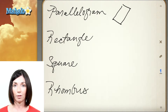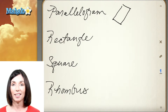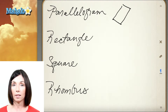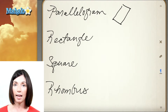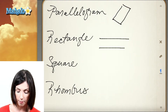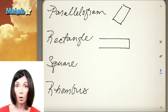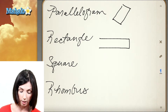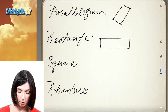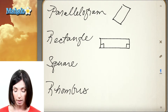A rectangle is a parallelogram with four right angles. It has two pairs of parallel sides and four right angles — we have a line here and another line parallel to it, and then one more pair of parallel lines here and here, but all the interior angles are right angles. That makes it a rectangle.